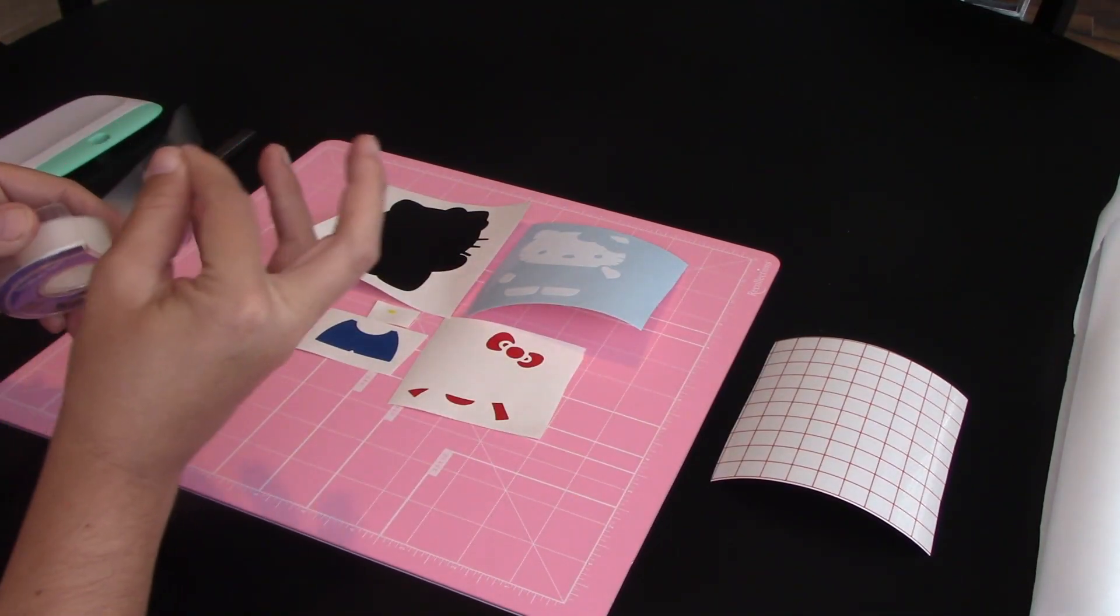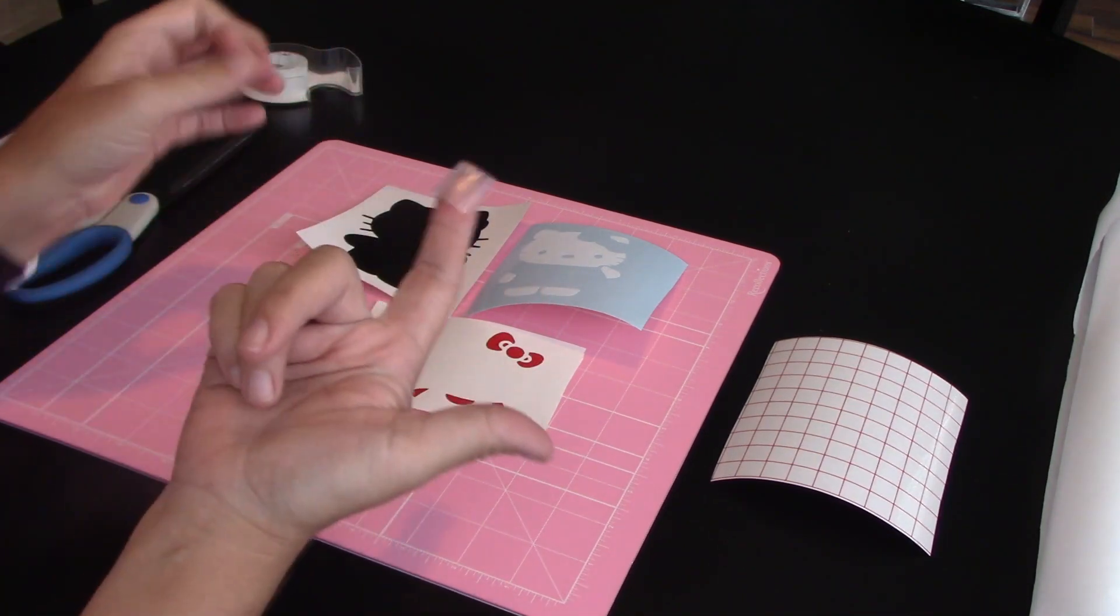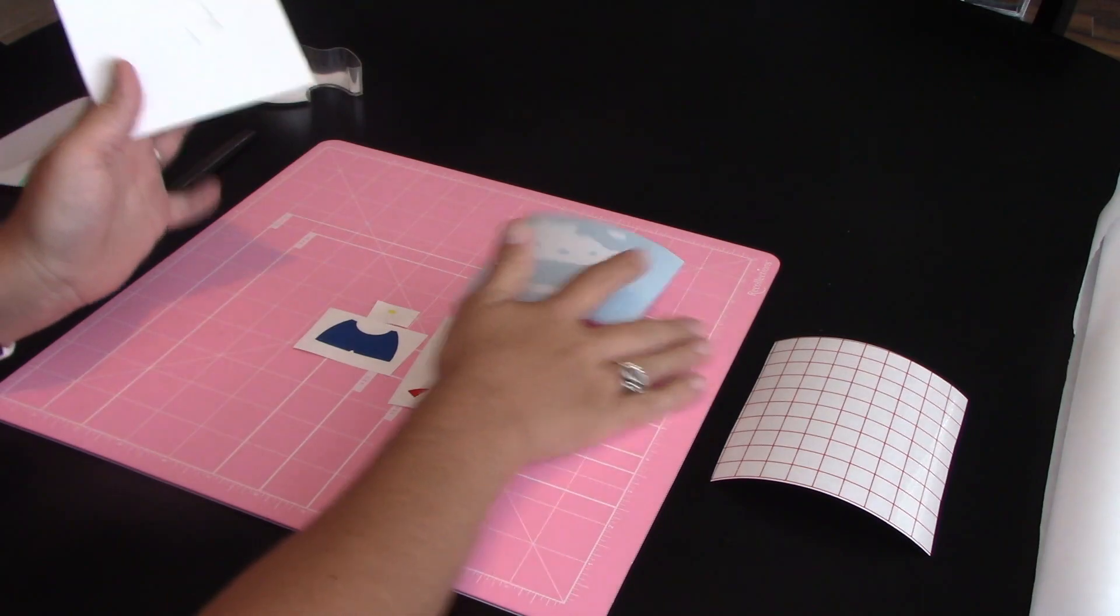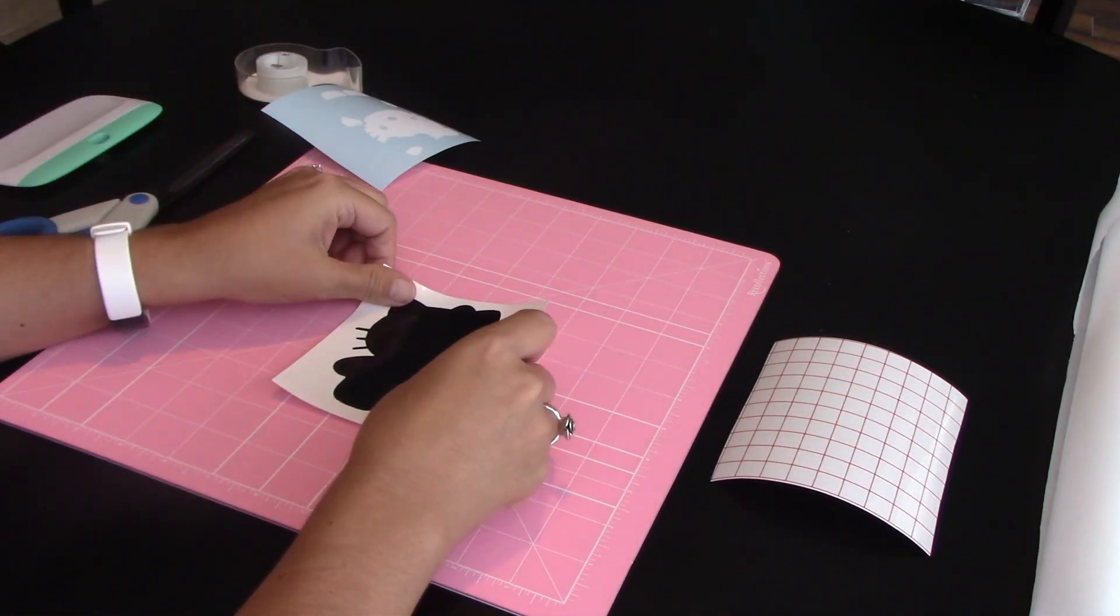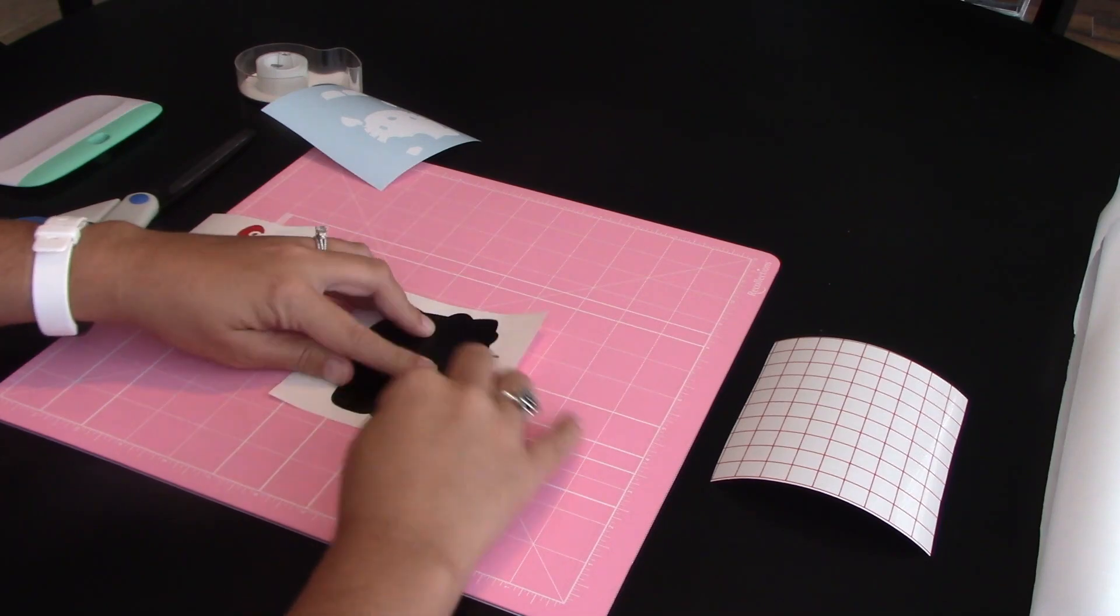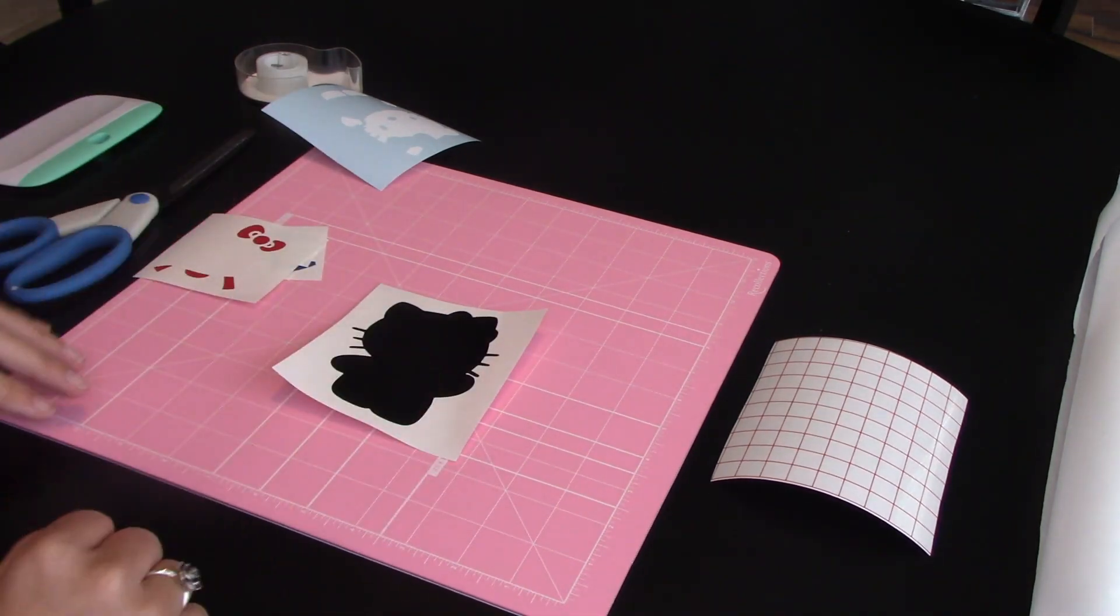So I'm going to take my tape and do a little circle thing. The reason I'm doing this is just so that this sticks flat to my surface. I don't want it lifting up while I'm working on it. So now it's stuck there, it's not going to come up.